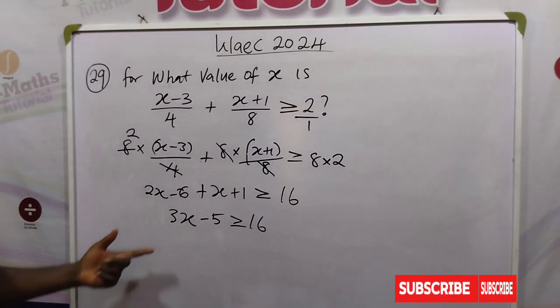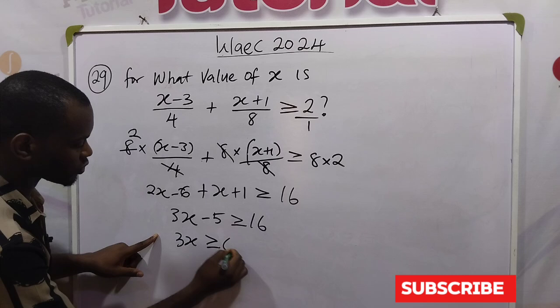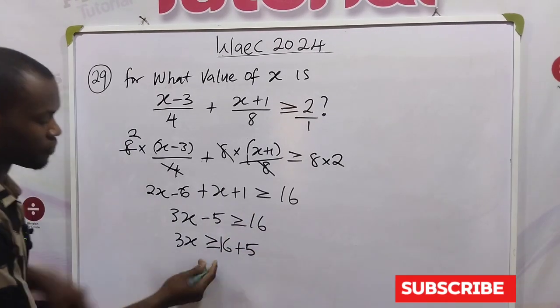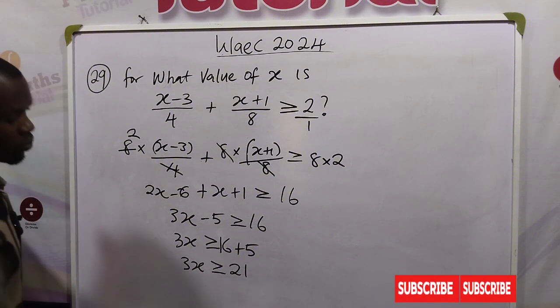So let's collect like terms here. We have 3x greater than or equal to 16. Taking this one over, we have plus 5. Add here, this is 3x greater than or equal to 21.